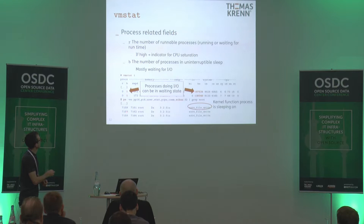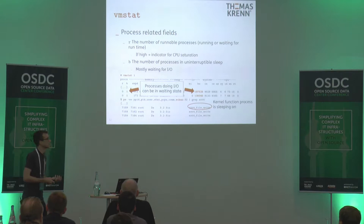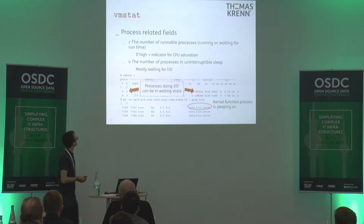Other process-related fields in VMStat include the R column and the B column. The R column is the number of processes that could be running or are waiting for runtime. If you have a high number in the first column of VMStat, it's an indicator for CPU saturation — it may be a good idea to add additional cores or optimize your code.